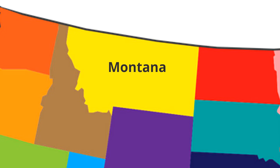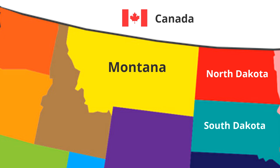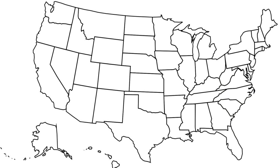Montana is bordered by one country and four states. Bordering Montana to the north is the country of Canada — Montana shares its northern border with Canada. Bordering Montana to the east are the states of North Dakota and South Dakota. Bordering Montana directly to the south is the state of Wyoming, and finally bordering Montana to the south and to the west is the state of Idaho.